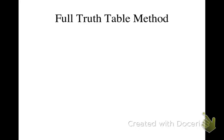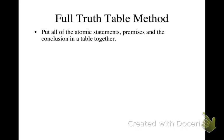This lecture will explain how to do the full truth table method for truth tables. The first thing we need to do is take all of the atomic statements in the argument, all of the premises, and the conclusion, and put them all in a table together.